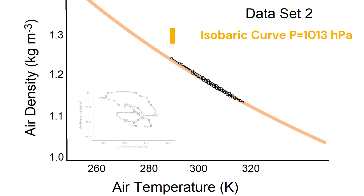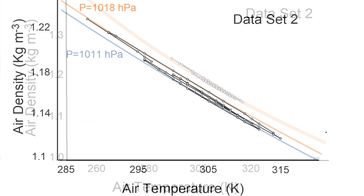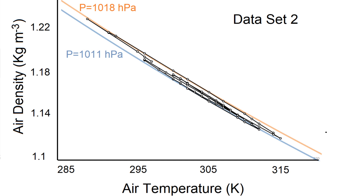By zooming into the details, it is clear that the measured data points are located between two isobaric curves. But the two isobaric curves are very close, which implies the surface air pressure during this period of time was almost fixed.